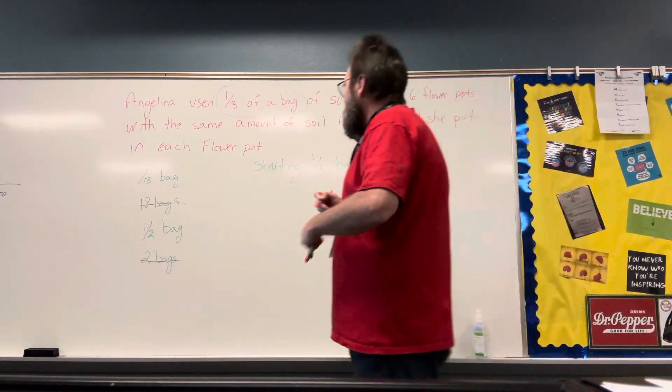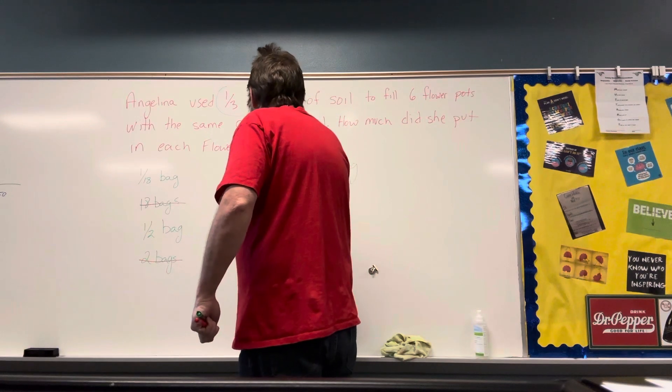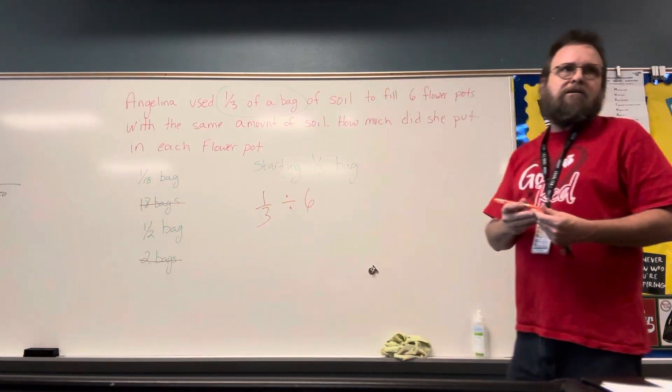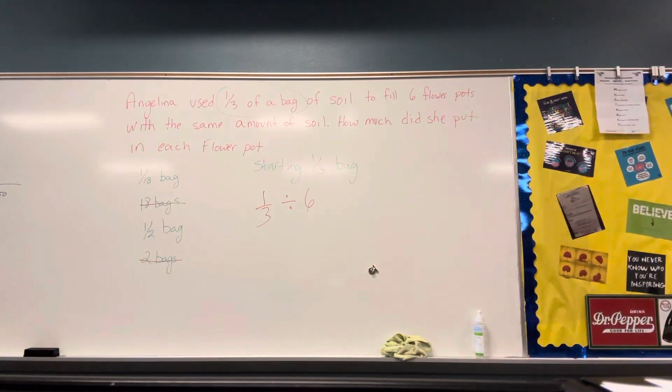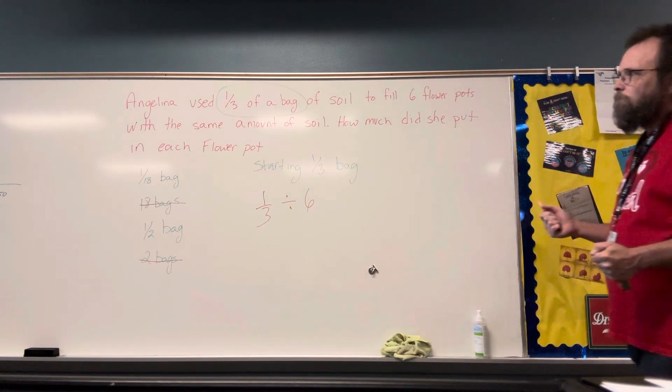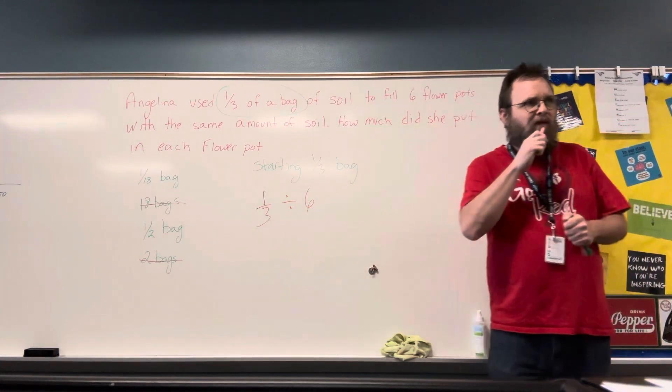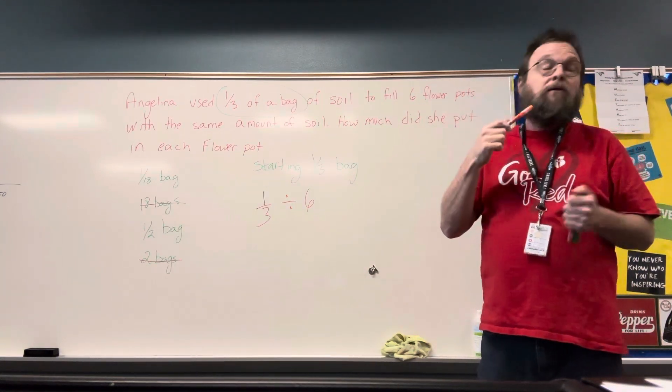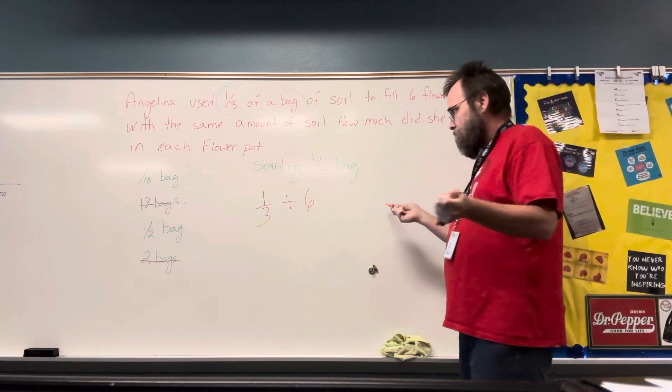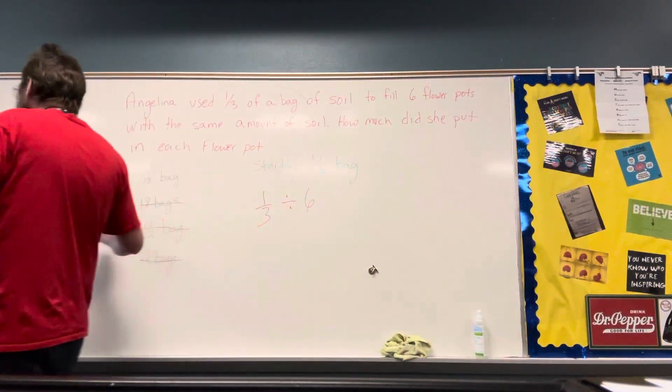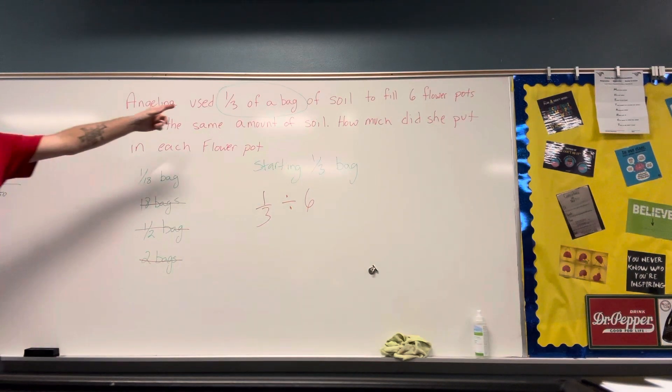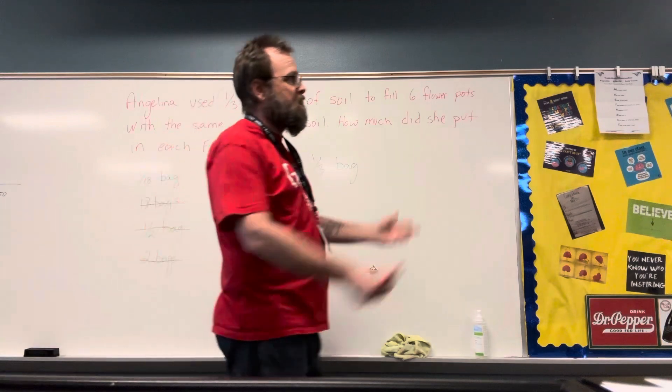All right, so we're starting with one-third of a bag. We're dividing that among the six pots. Serena? I just wanted to recommend the easier way. Since one-half is greater than one-third, you can eliminate that too, so you're left with one-third. Thank you. Good. We can eliminate one-half, because if we only start with one-third, she couldn't put half a bag in each of the six pots.